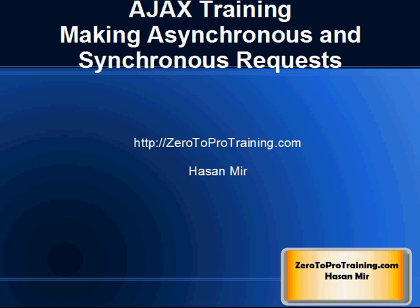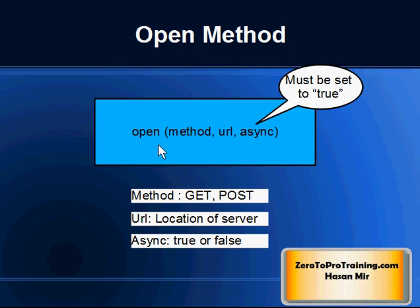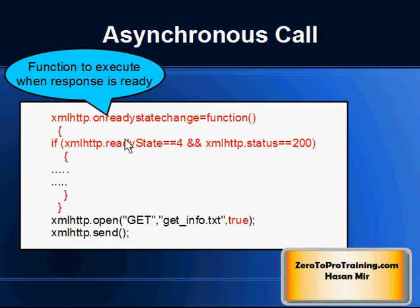To make an asynchronous request, the open method should be called with the value true in the third parameter. When using async equal to true, you need to specify a function to execute when the response is ready in the onReadyStateChange event.